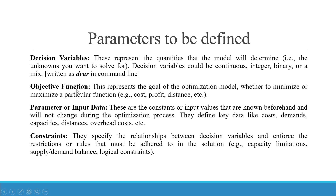The second parameter is the objective function. This represents the goal of the optimization model — whether to minimize or maximize a particular function. Examples include cost, profit, or distance. The third parameter is input data, also called parameters. These are the constants or input values that are known beforehand and will not change during the optimization process.